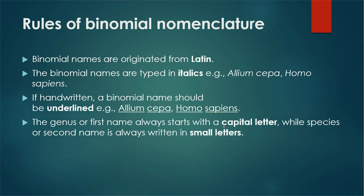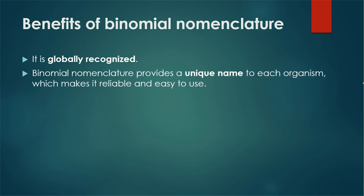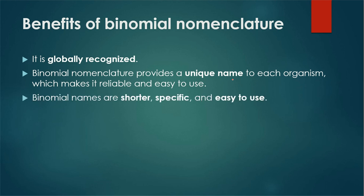The genus name always starts with a capital letter, while the species name starts with a small letter. The benefits of using binomial nomenclature are that it is globally recognized — a person traveling from one country to another can use the name without difficulty. Binomial names are unique and represent one specific organism. It reduces confusion, such as between ravens and crows, since they now have distinct scientific names. Binomial names are shorter, specific, and easy to use.